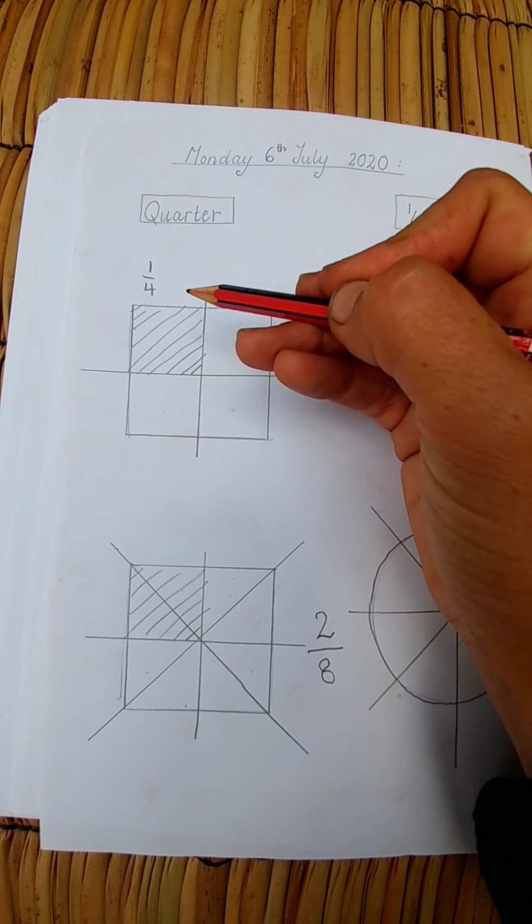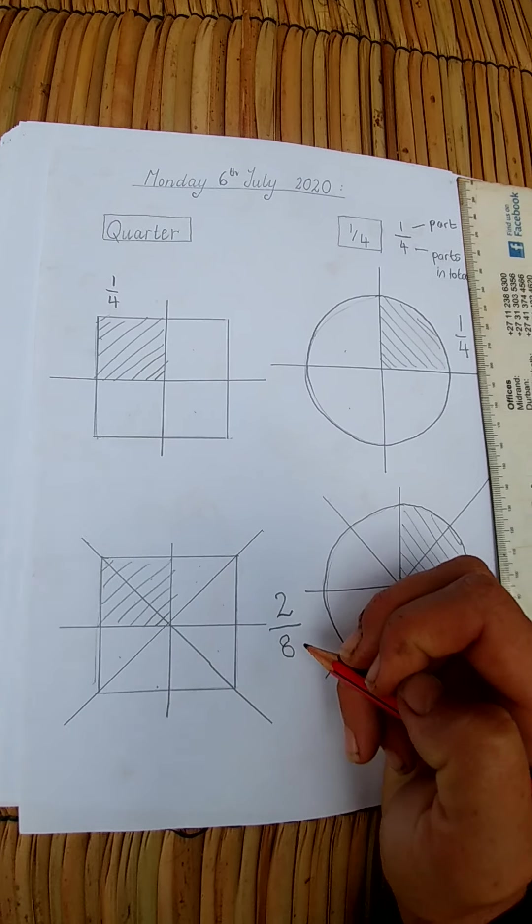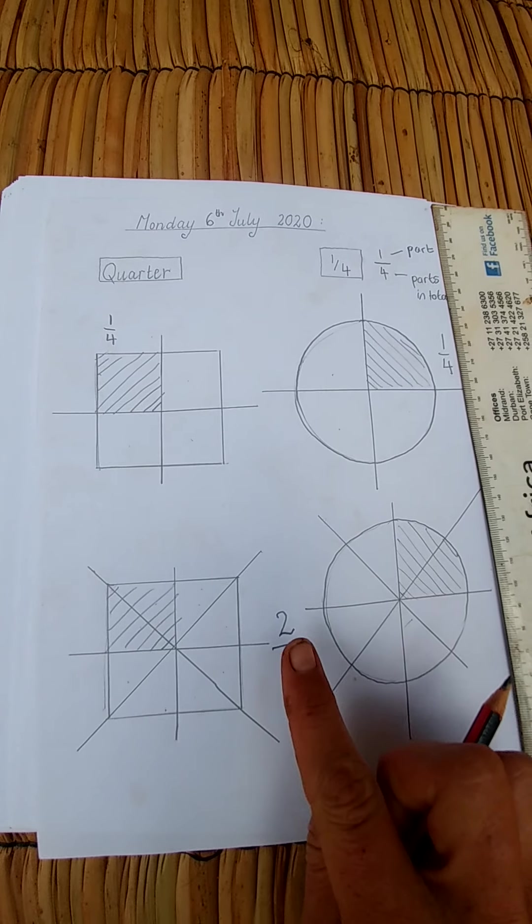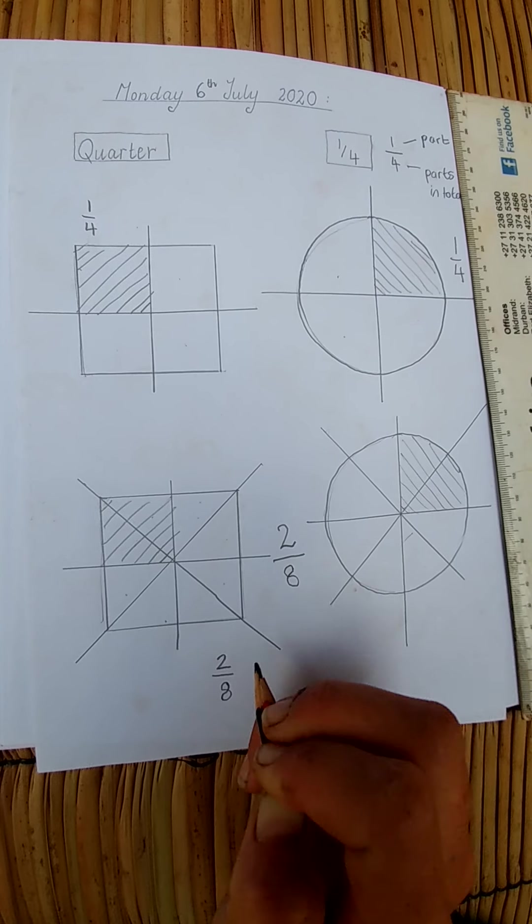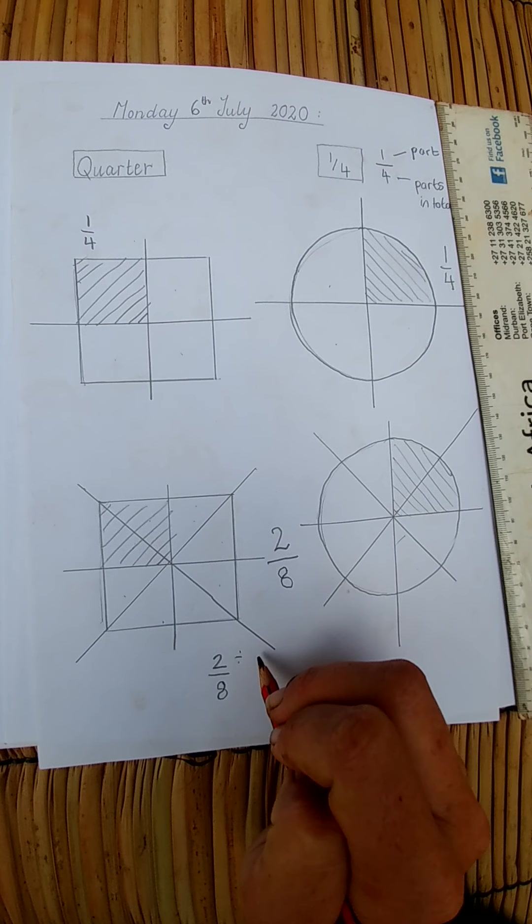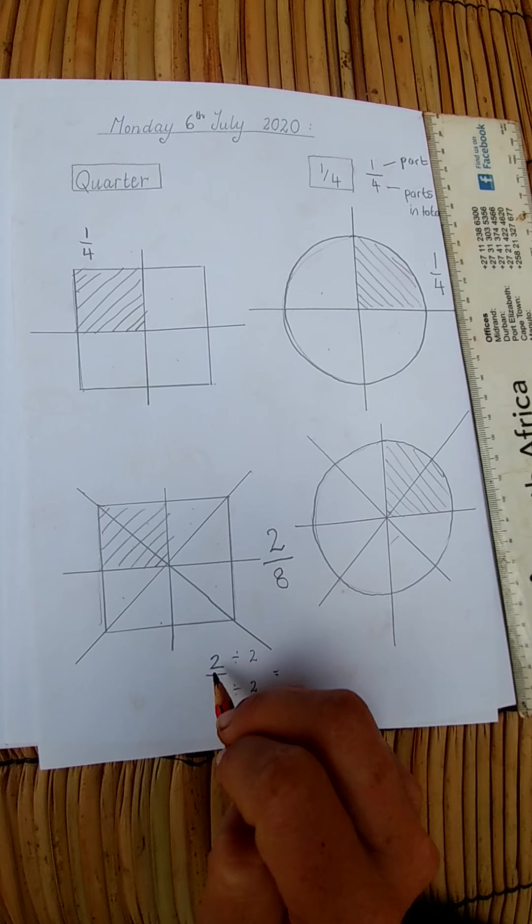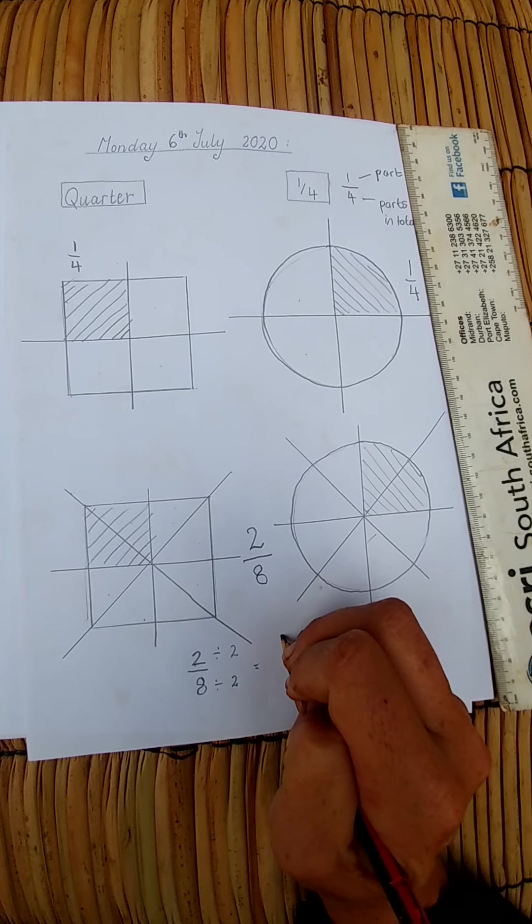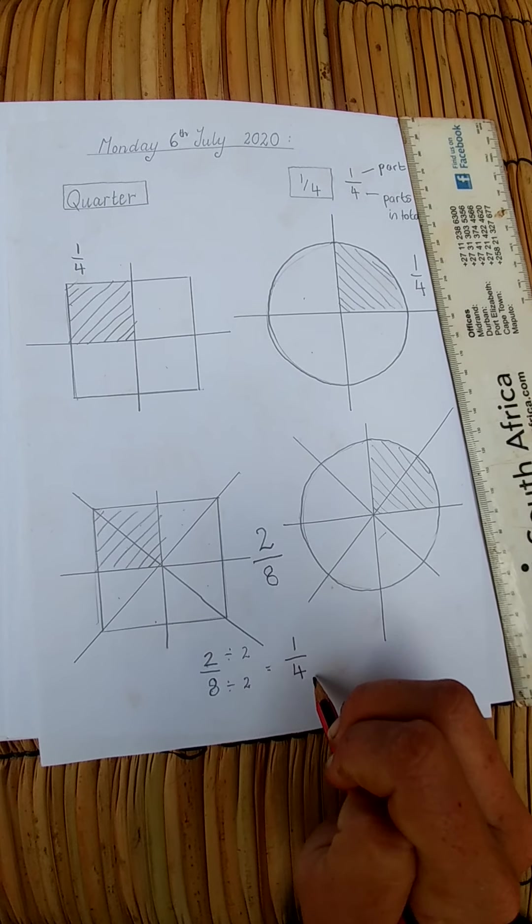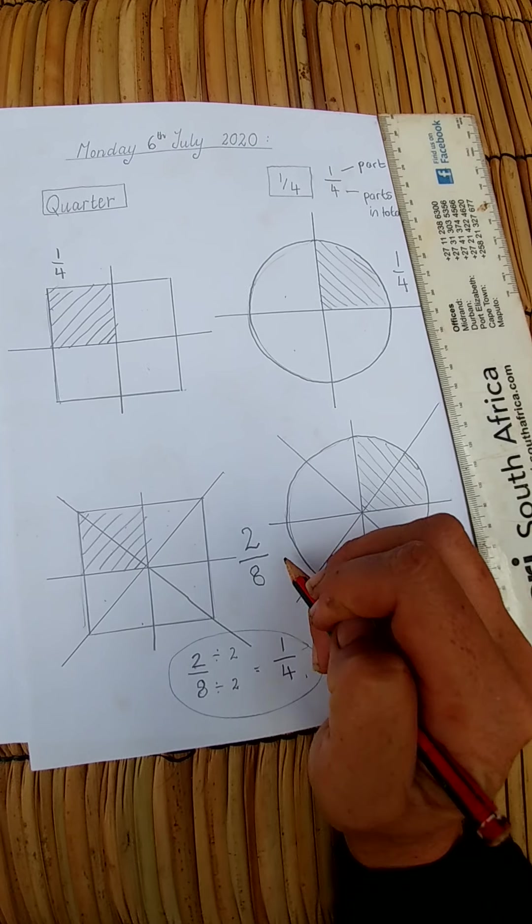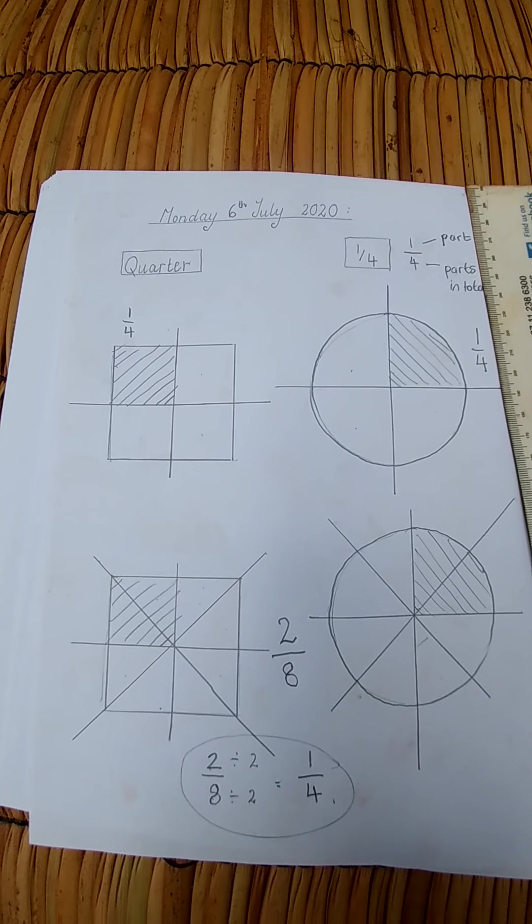Which means that this one is two of eight parts. So now we know that one quarter and two eighths is the same thing. If we take 2 over 8 and we divide this by 2 and divide this by 2, what do we get? What's half of 2? It's 1. What's half of 8? It's 4. So again we have a quarter.